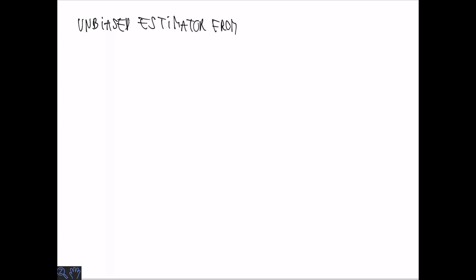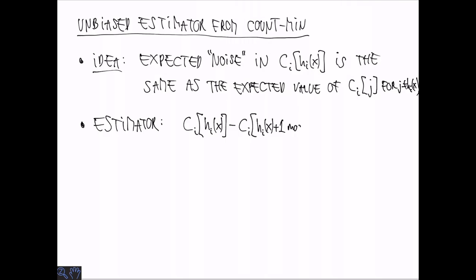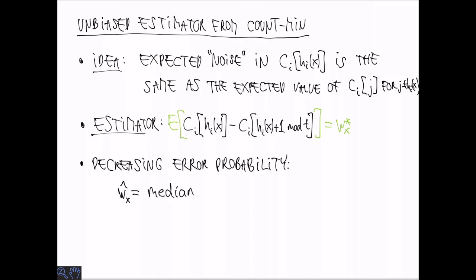Finally let's discuss how to create an unbiased estimator based on count-min. The version we discussed is always going to overestimate the true counts. The idea is to subtract the expected noise from each of the estimators. What we can observe is that the expected noise is the same as the expected value of any other entry in the count sketch. So any C_ij where j is different from the hash value of X. So that is we can look at the estimator that takes C_i h_i of X and subtracts some other entry in the sketch from this. And the expectation of that is going to be exactly the true weight of X. Now we can combine several of these not with minimum because it's no longer the case that we have positive noise but we can use the median.